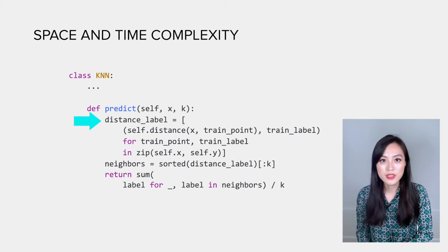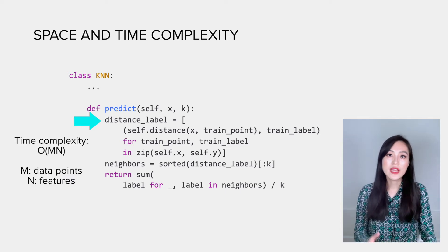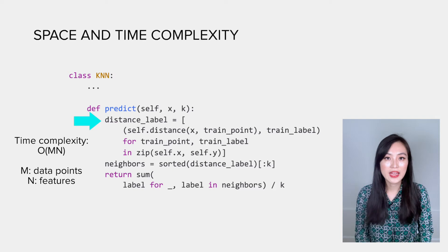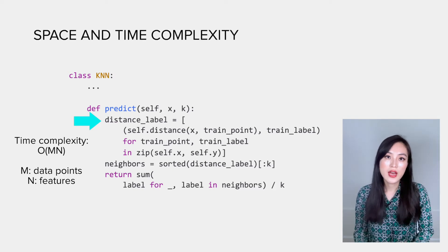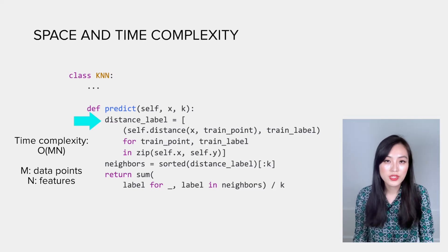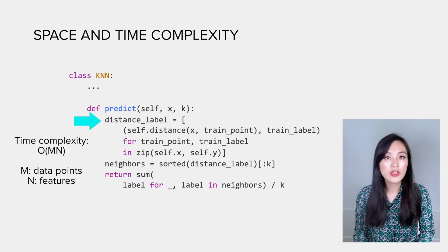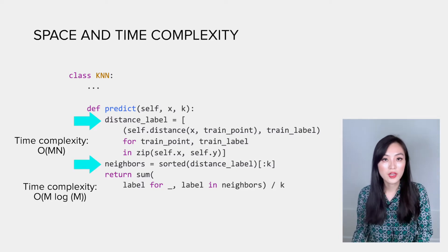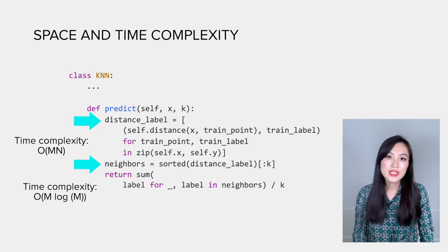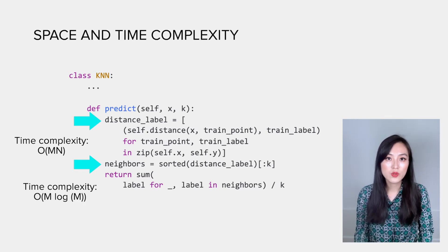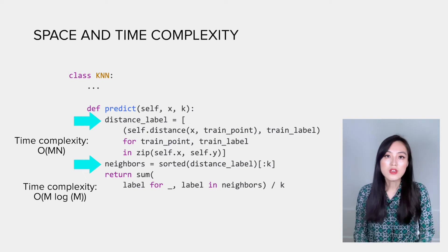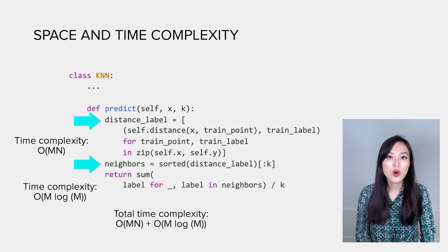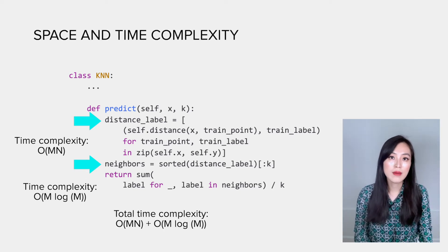In the predict function, constructing an array of distance-label pairs have a complexity of O(MN), with M being the number of data points and N being the number of features, as we need to go through all the data points and compute the distance using all features. The most time-consuming part comes in the sorting, which gives O(M log M). This is the complexity of Python's built-in sorting algorithm. So the total time complexity is O(MN) plus O(M log M).